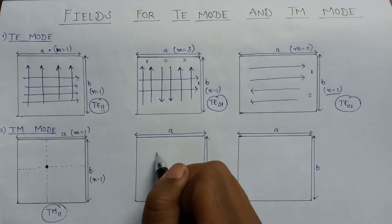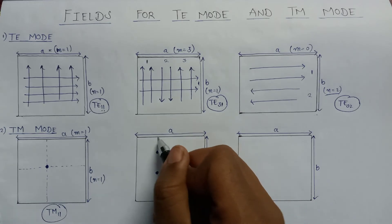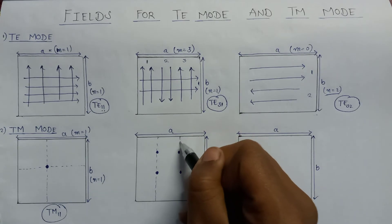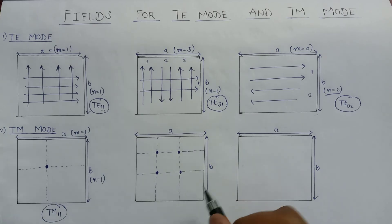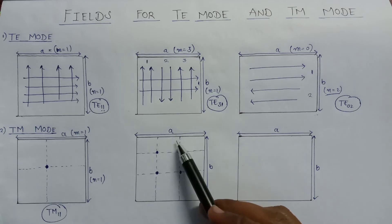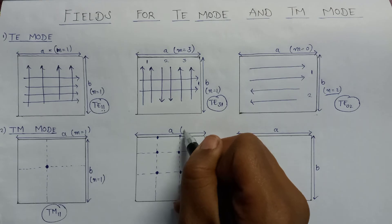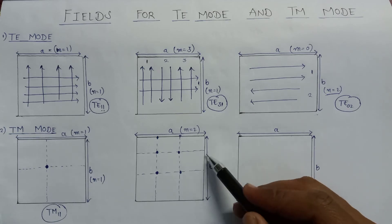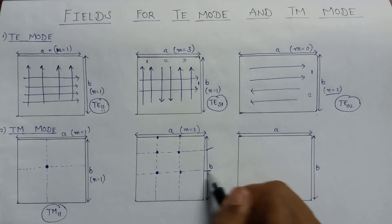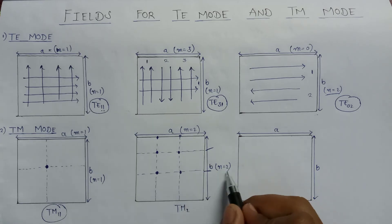Secondly, let us assume there are four dots. If we join all these dots by the help of current waves, it will form a certain structure. Now let us count the number of current waves with respect to A: here is one wave and here is the second wave, so the number of waves with respect to A is 2, meaning M equals 2. If we count the current waves with respect to B, here is one wave and here is the second wave, so the value of N is also equal to 2. So this is TM22 mode.